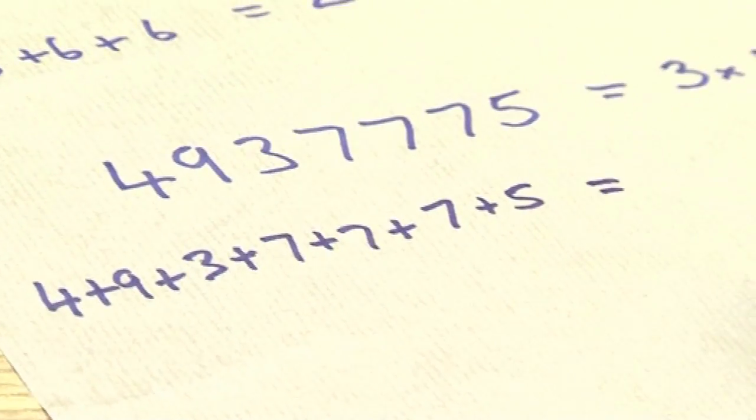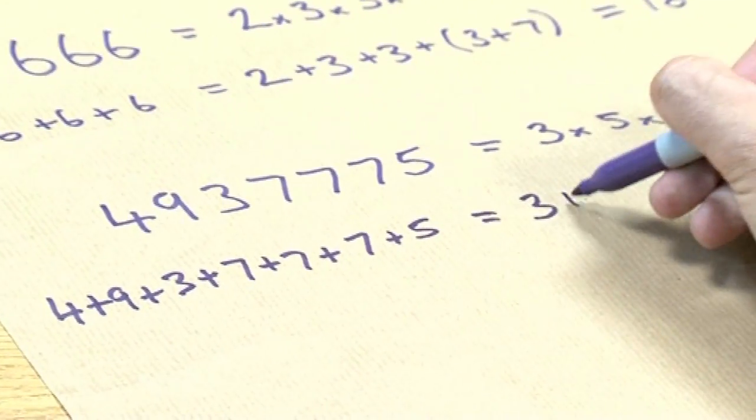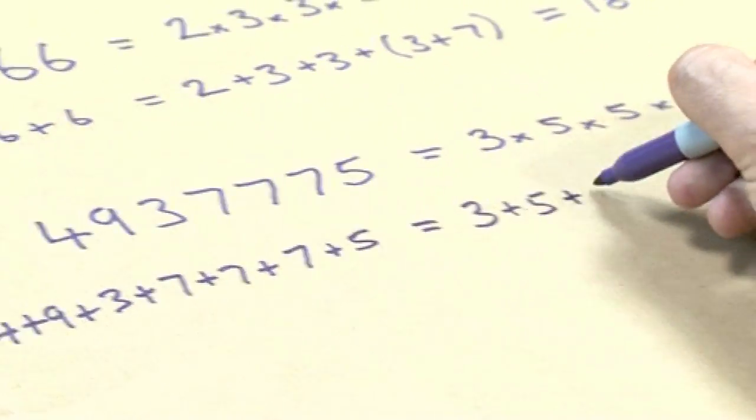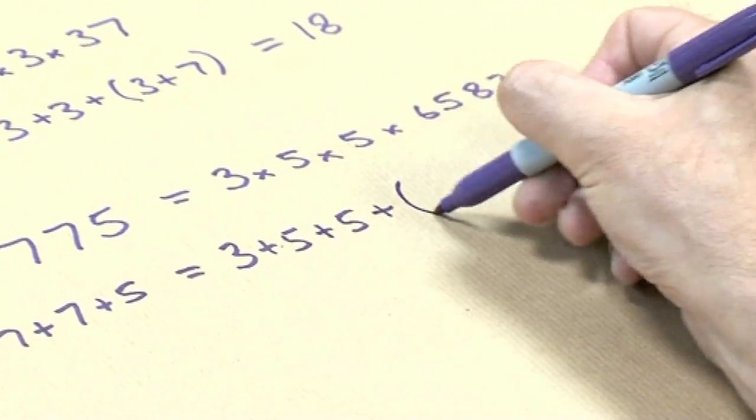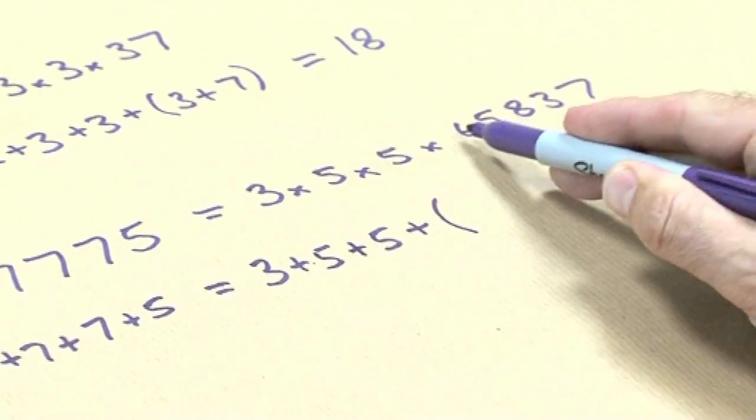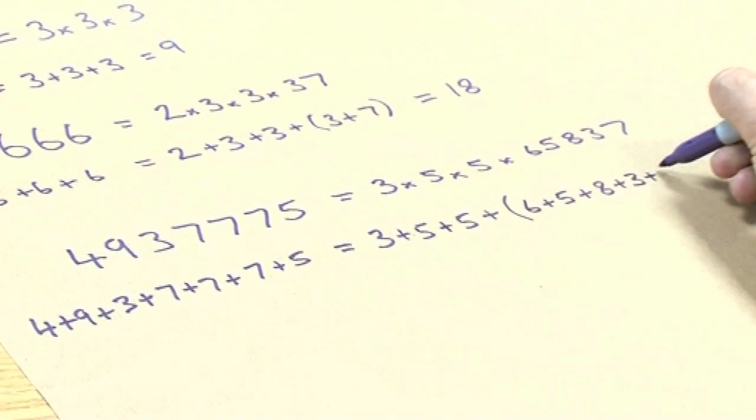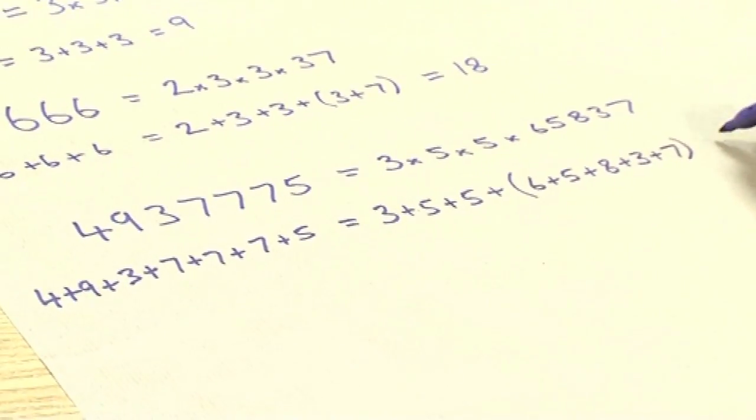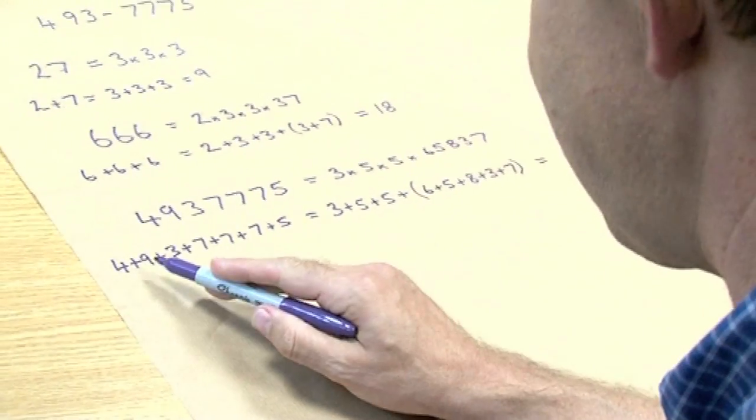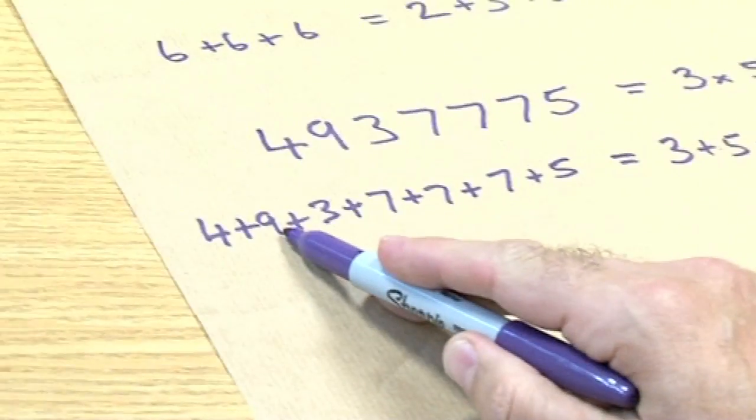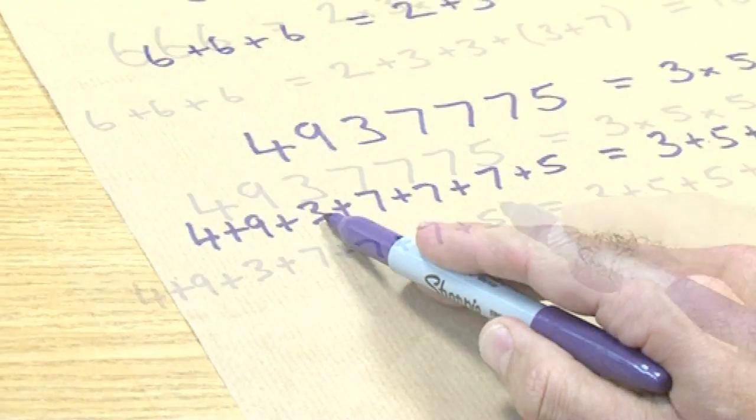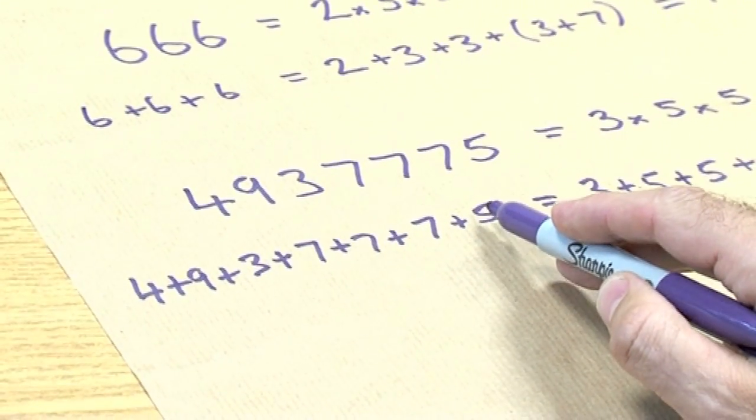And this should equal 3 plus 5 plus 5, plus, and then we do this trick, right? We break this up into its individual digits. Plus 6 plus 5 plus 8 plus 3 plus 7. I hope this works, otherwise I'm looking a right idiot. 4 plus 9 is 13, plus 3 is 16, plus 5 is... 42. 42.